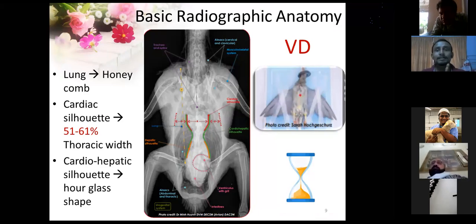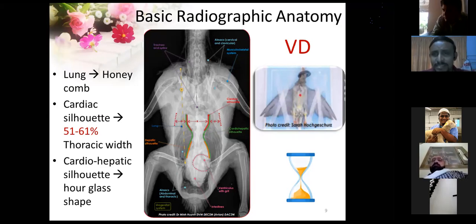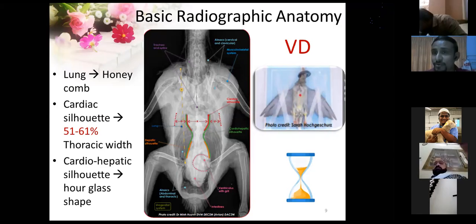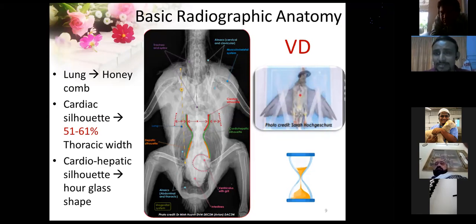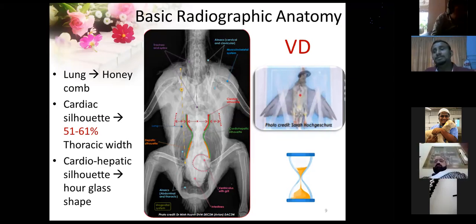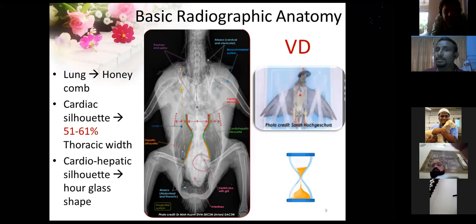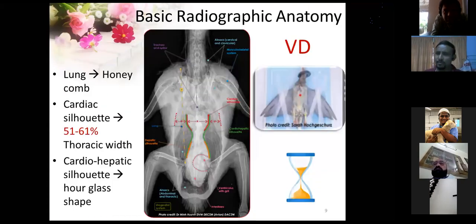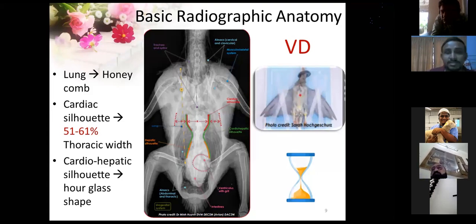Now we will move to basic radiographic anatomy. Just like dogs and cats, we can use ultrasound scanning, but ultrasound is very limited in birds because we have to pluck all the feathers. X-ray is not a problem at all — conventional, CR, digital X-rays are all available. Whenever you take any X-ray, you must take orthogonal views — that is two views: one ventrodorsal view and one lateral view. This applies not only to birds but to any animal, because the 90-degree orthogonal view is very important for comparative assessment.